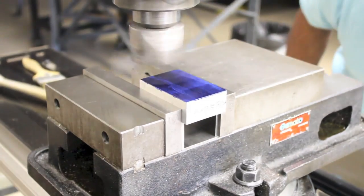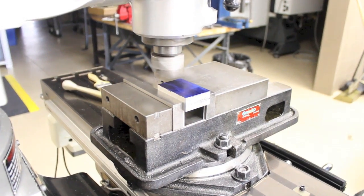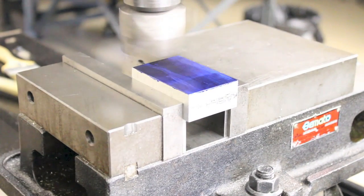If the face that you're going to mill is not above the vise jaws, a set of parallels will need to be used.